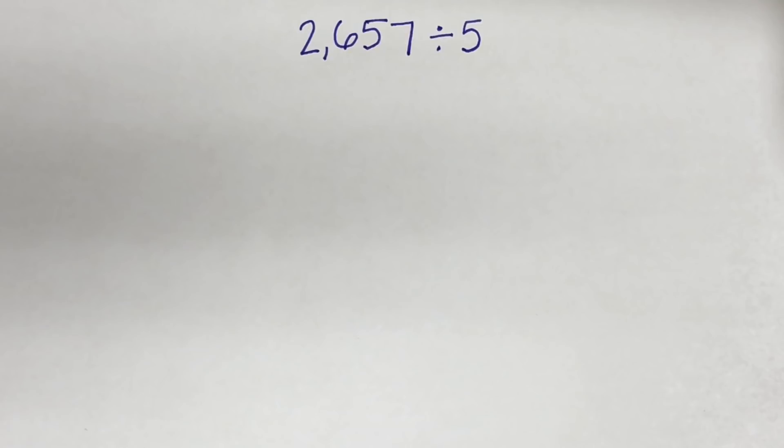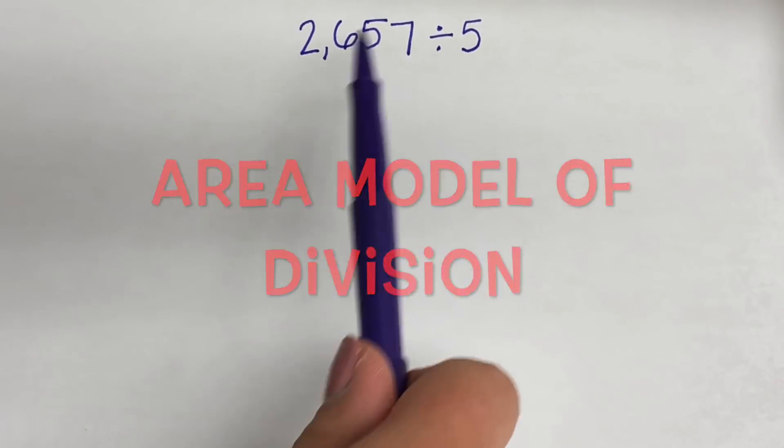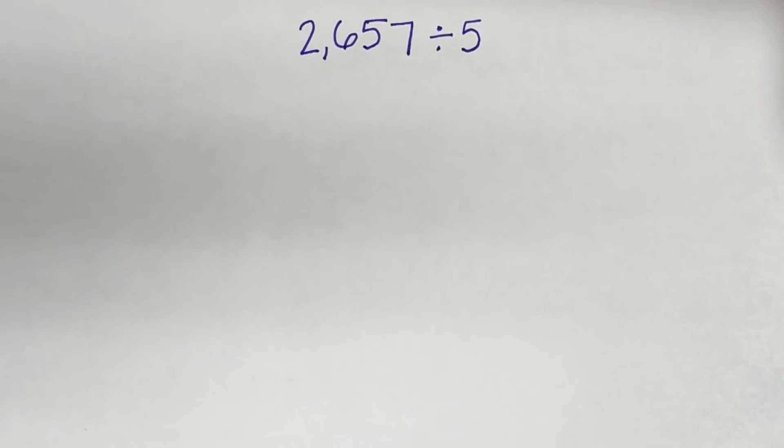We are going to do 2,657 divided by 5 using the partial quotients method. It is also sometimes called the box method and it could also be called the area model. So a bunch of fancy names, they all do one thing and that is divide. Okay, so let's get started.